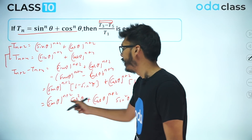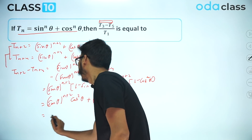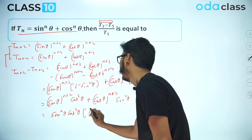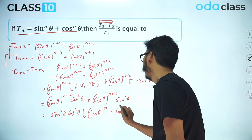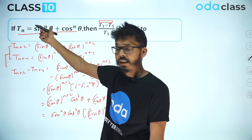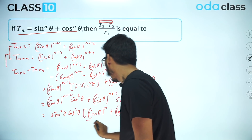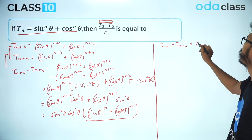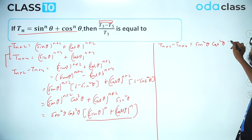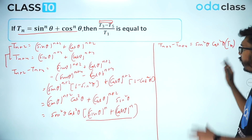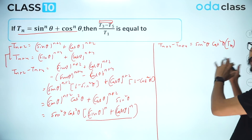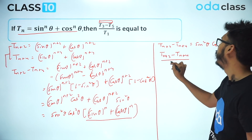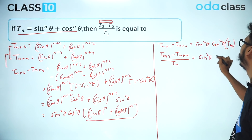Now I take sin²θ and cos²θ common from the two terms, which gives sin²θ · cos²θ · (sinⁿθ + cosⁿθ). But sinⁿθ + cosⁿθ is exactly tₙ by definition. So we arrive at: tₙ₊₂ − tₙ₊₄ = sin²θ · cos²θ · tₙ. Dividing both sides by tₙ gives (tₙ₊₂ − tₙ₊₄) / tₙ = sin²θ · cos²θ.